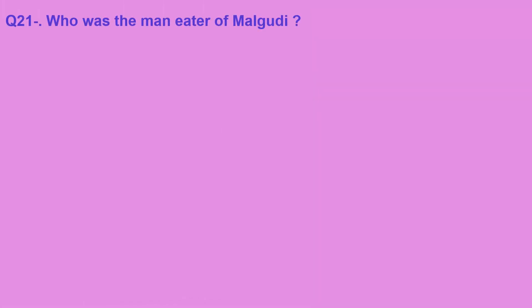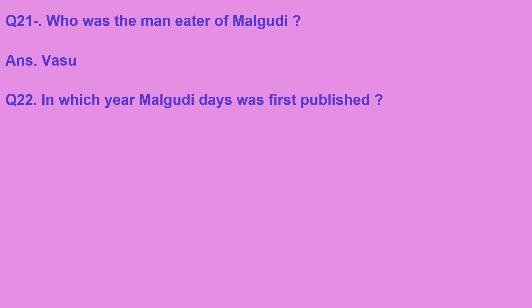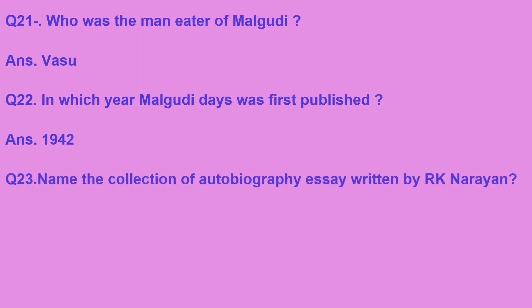Who was the Man-Eater of Malgudi? In RK Narayan's novel Man-Eater of Malgudi, Vasu was the man-eater. In which year was Malgudi Days first published? Malgudi Days was first published in 1942. In many books 1943 is written, but according to Wikipedia the first publication of Malgudi Days was in 1942.